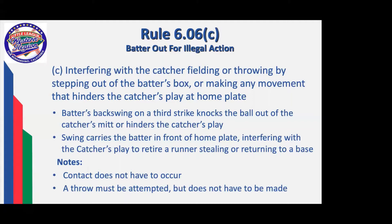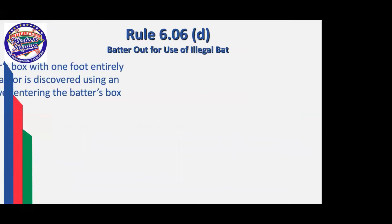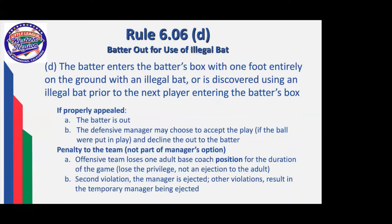If the swing carries the batter in front of home plate, interfering with the catcher's play, that is also going to be illegal action. Whether the runner is stealing or trying to return to a base, contact does not have to occur, but a throw must be attempted. A throw does not have to be made if for some reason the catcher is interfered with in such a way that he pulls up and stops his throw. And lastly, the use of an illegal bat: any time the batter enters the box with one foot on the ground with an illegal bat, or is discovered having used the illegal bat prior to the next player entering the batter's box, when properly appealed by the manager, the batter will be out, and the offensive team will lose the position of an adult base coach for the remainder of the game.